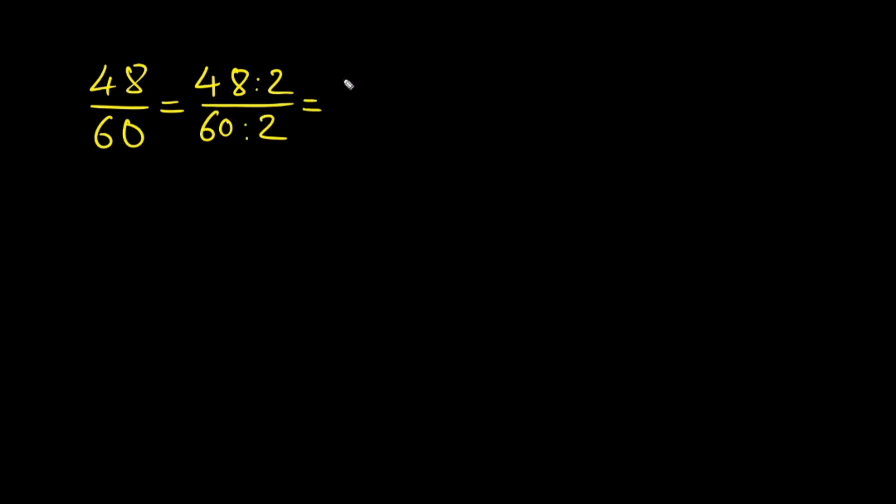48 divided by 2 is 24. 60 divided by 2 is 30. These numbers are still even, so if we want to we can divide by 2 again. Half of 24 is 12. Half of 30 is 15.